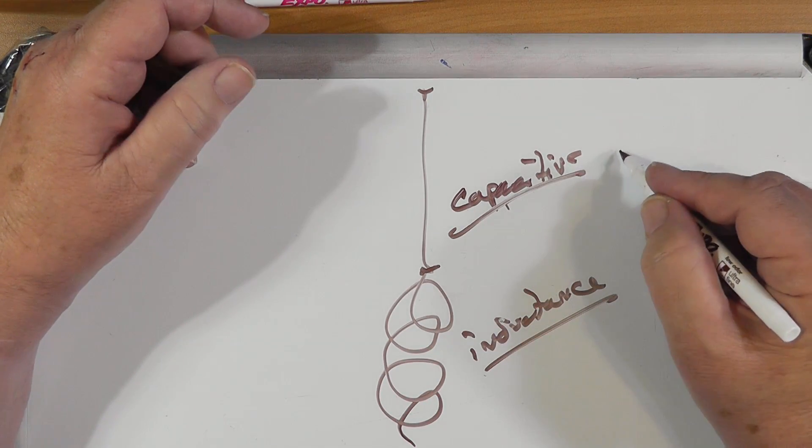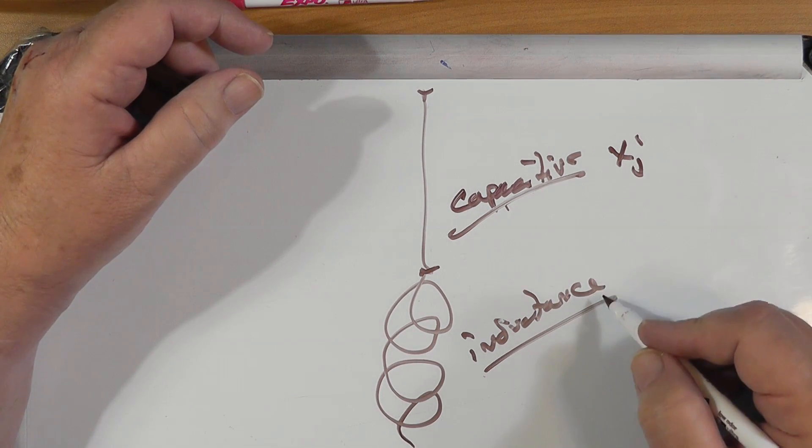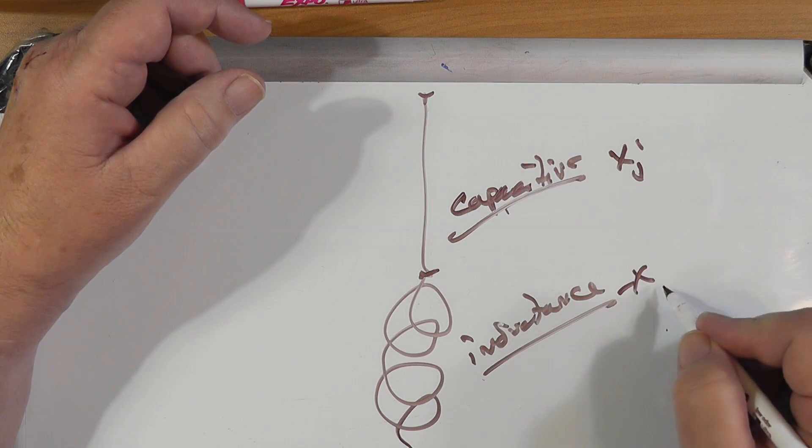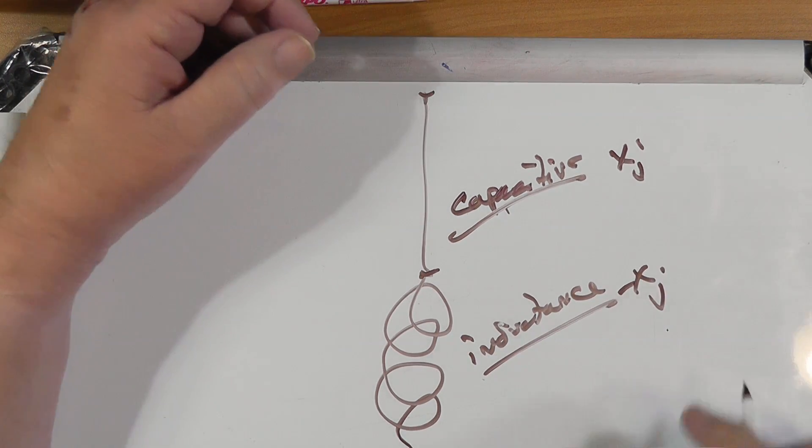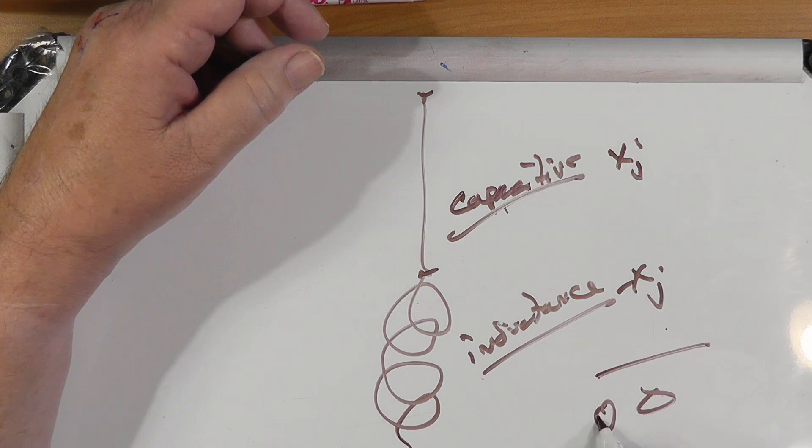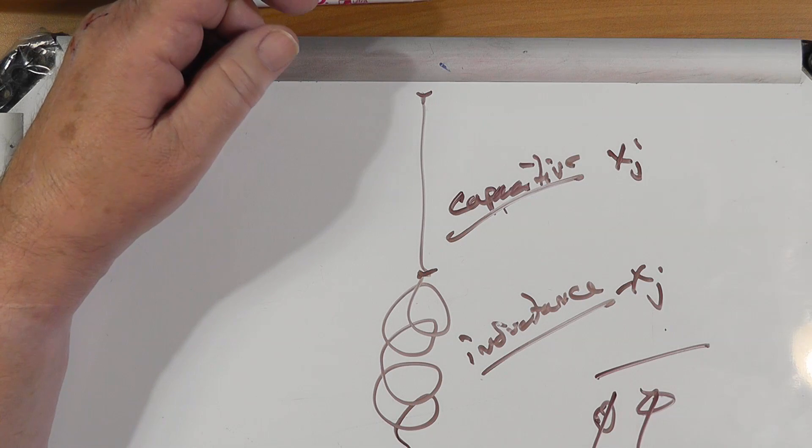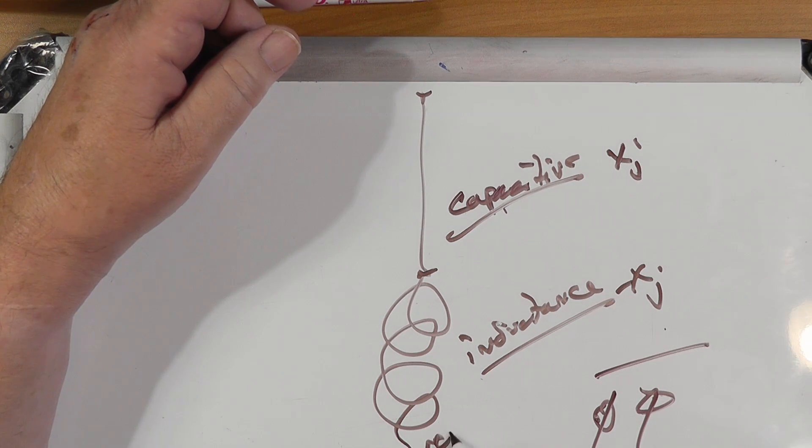to the capacitive to the point where they balance out. So this is, say, XJ, and this right here is minus XJ. You add that and you get zero phase, zero phase angle. And it looks resistive down here.